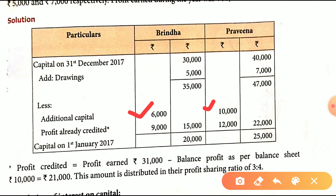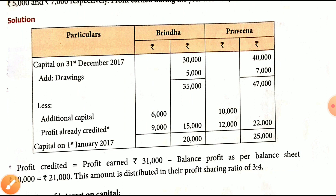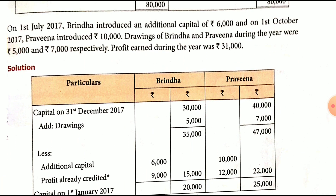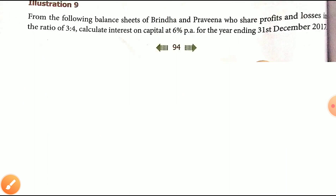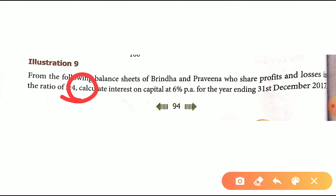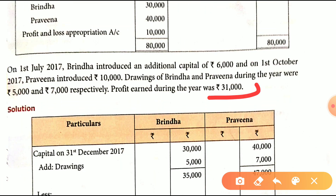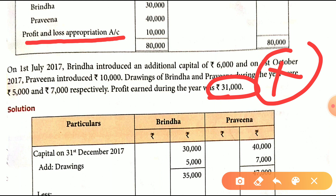So 6,000 and 10,000. The profit for the year during the year is 31,000. The profit ratio for the year is 3 is to 4. We will see the Profit and Loss Appropriation account.